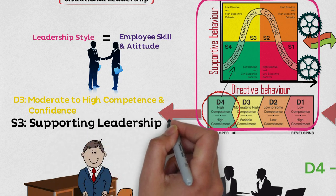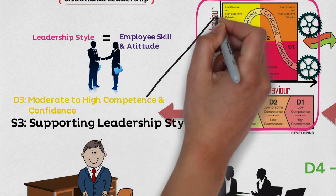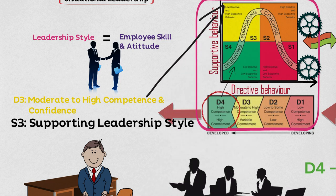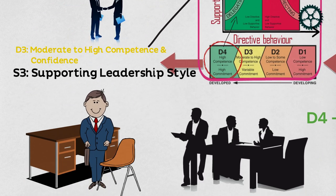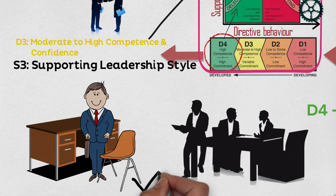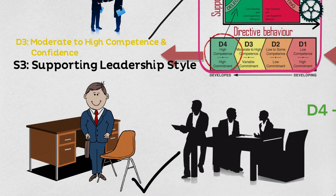Participating — S3: in this approach, the leader offers less direction and allows group members to take a more active role in coming up with ideas and making decisions. Employees at this stage no longer need to be told what to do, but the leader still needs to be involved, as there is still some developing to do.